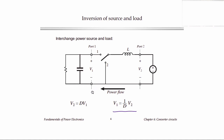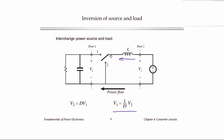By interchanging the source and the load, we've reversed the direction of power flow, which makes current flow the other direction through the inductor. As a result, we have to look carefully at how we realize the switches. Back in chapter four, we introduced a formal way to realize the switches. Applying that process here, we find we have to put a transistor from the switching node to ground, and a diode from the switching node to port one — quite different from what we had in the buck converter when current flowed the other direction.